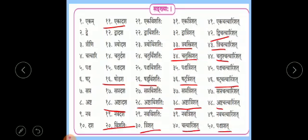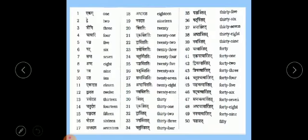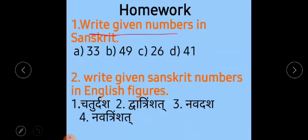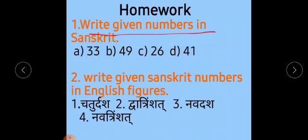If you remember all these, then you don't need to learn all the spellings. You will write this in your copy so that it will be very easy to learn. You will read numbers and practice the samayaha at your home so that you can recognize all the things very easily. Now this is your homework: write given numbers in Sanskrit - 33, 49, 26 and 41. Write given Sanskrit numbers in English figures: Chaturdasha, Dvatrimshat, Navadasha and Navatrimshat. Children, you will write all the numbers and all the things related to samayaha in your copy and homework also. Thank you.